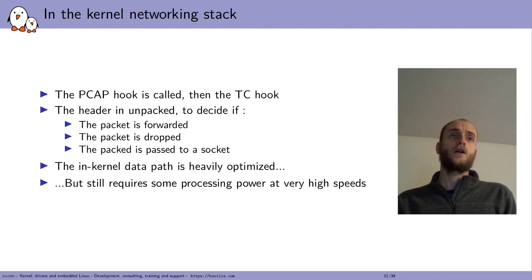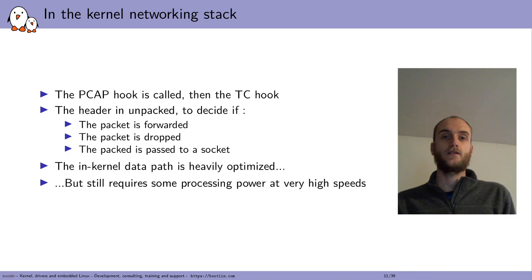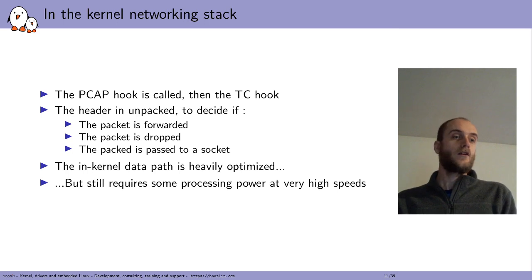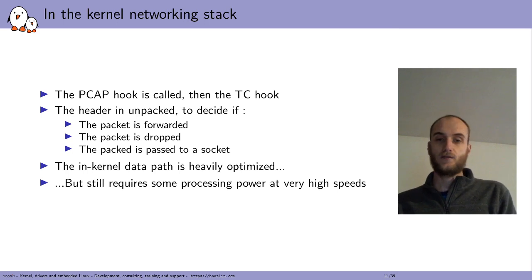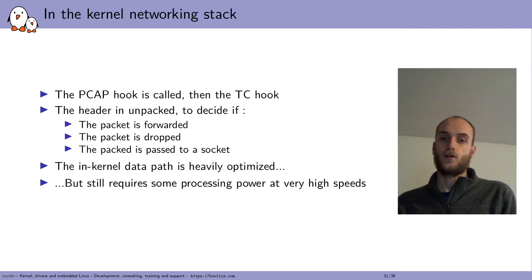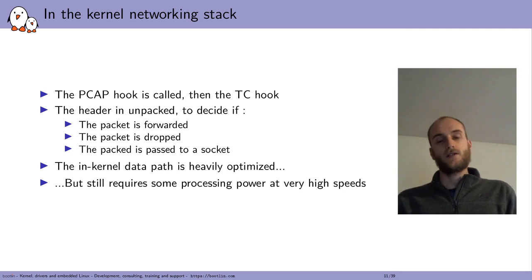The kernel data path is very complex, supports lots of protocols, has been there for a while and is heavily optimized for many use cases. However, processing and unpacking the various headers still requires significant CPU power, especially at very high network speeds like 10 or 40 gigabits per second or higher. In that case the CPU can start becoming the bottleneck.